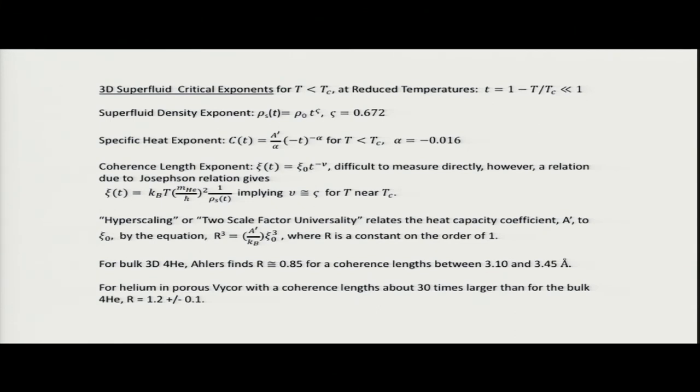There's another thing which is easy for theorists to think of in terms of theory, but quite difficult to measure, is the coherence length involving the fluctuations of the system as you approach the transition. This coherence length diverges at the transition with an exponent minus nu. But there is a theoretical relation between the coherence length and the superfluid density supplied by Josephson a long time ago. The important thing here is that the coherence length is inversely proportional to the superfluid density. So it expands as the superfluid density is going to zero.